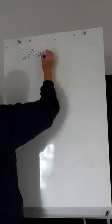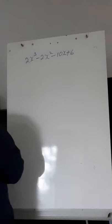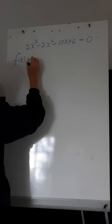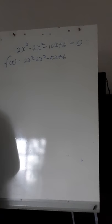Solving cubic equations means we will first have to factorize, and we will factorize using the remainder theorem. So what we're going to do is solve 2x cubed minus 2x squared minus 10x plus 6 equals 0. That is a cubic equation and we are going to solve it to get the value of x. The first thing I'm going to have to do is factorize. f of x is equal to 2x cubed minus 2x squared minus 10x plus 6.